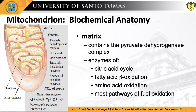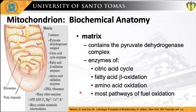The mitochondrial matrix, enclosed by the inner membrane, contains vital enzyme systems including the pyruvate dehydrogenase complex, the citric acid cycle, the fatty acid beta-oxidation pathway, and pathways of amino acid oxidation — essentially all pathways of fuel oxidation except glycolysis, which occurs in the cytosol. The selectively permeable inner membrane segregates cytosolic metabolic intermediates from those in the matrix, while specific transporters carry pyruvate, fatty acids, and amino acids into the matrix. ADP and inorganic phosphate are transported into the matrix as newly synthesized ATP is transported out.